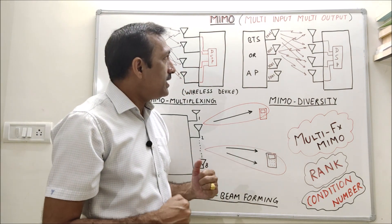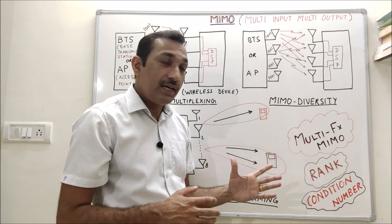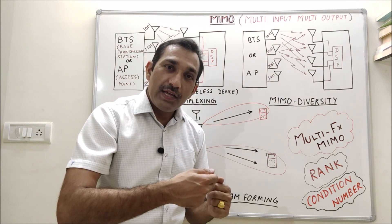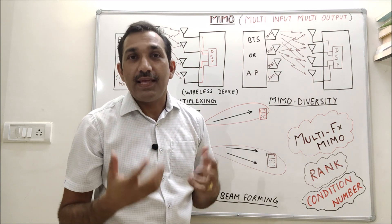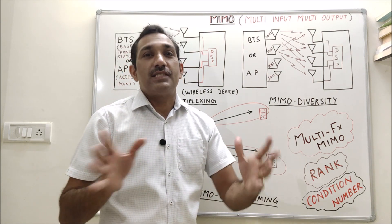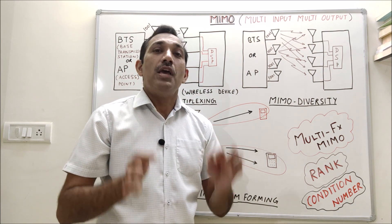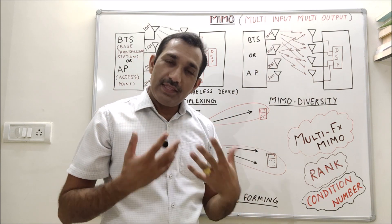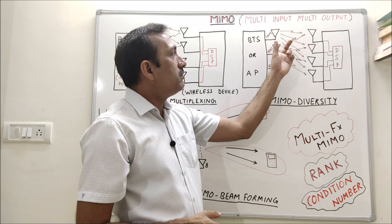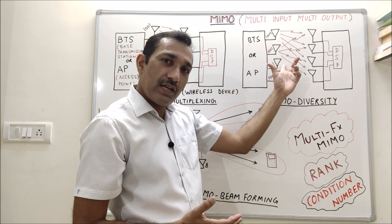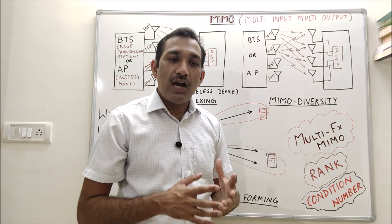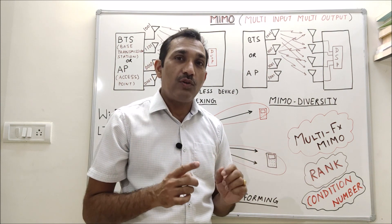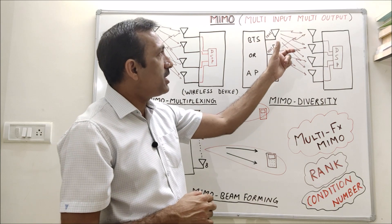Now let's look into MIMO diversity. MIMO diversity is where we transmit same data from all the antennas. That means we are sending same data from different antennas, that means different paths are followed. So MIMO is taking advantage of multi-path. If signal from this antenna is not received properly then there are high chances that signal from this antenna is received or signal of this one is received. So that means our reliability has gone high.